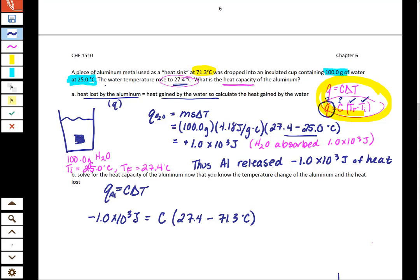And then when it says in the problem that the water temperature rose to 27.4 degrees, that means that the aluminum and the water temperature came to equilibrium. They came to be the same temperature and that was the final temperature for the water and the aluminum. So that means that we can use 27.4 down here in our T final.